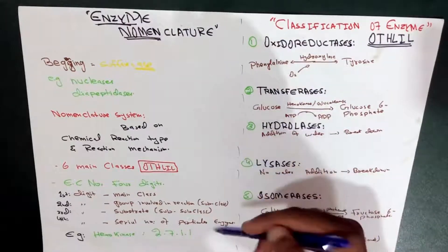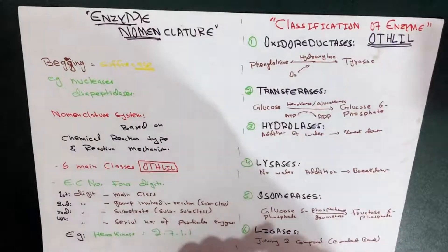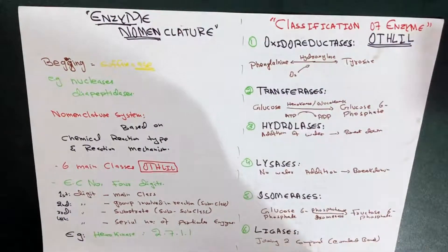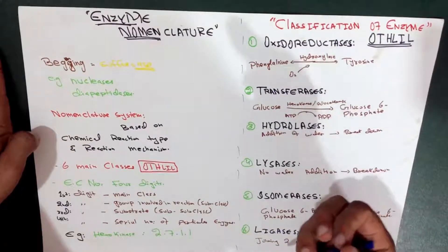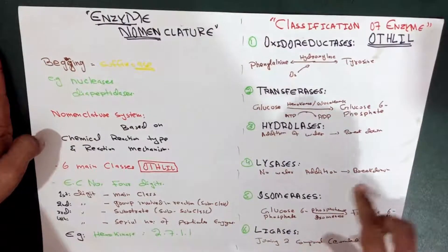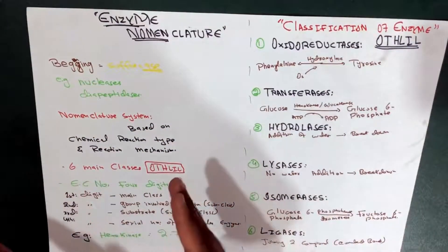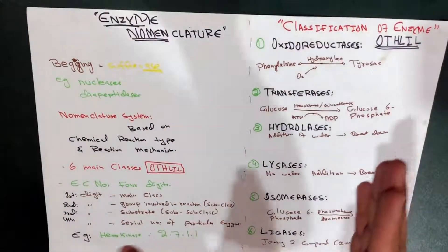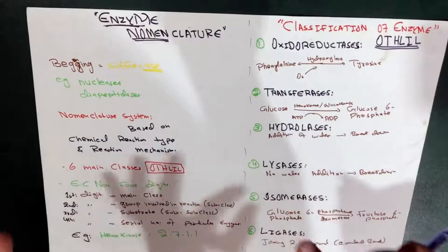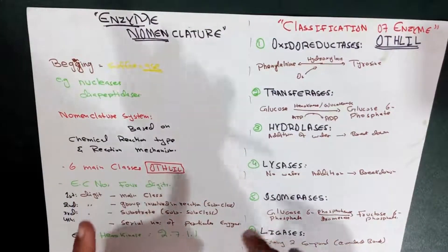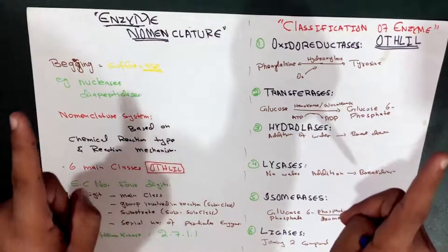In order to have uniformity and better understanding, the International Union of Biochemistry (IUB) adopted a nomenclature system which was based on two things: the chemical reaction type and the reaction mechanism.